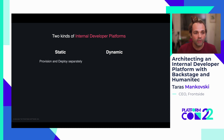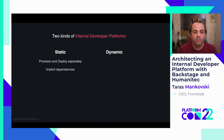The most common ones are the static internal development platforms. These treat provisioning and deployment as two separate processes. They usually have one set of configurations for provisioning and a different set of configurations for deployment. These internal developer platforms typically do not provide a way to express dependencies between the infrastructure and the workloads.